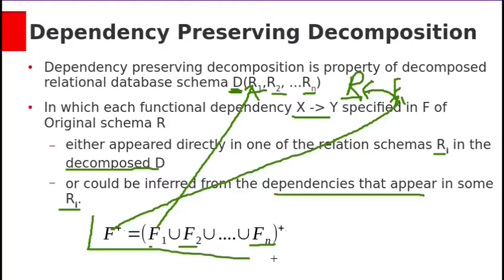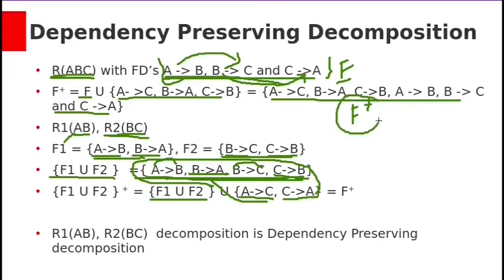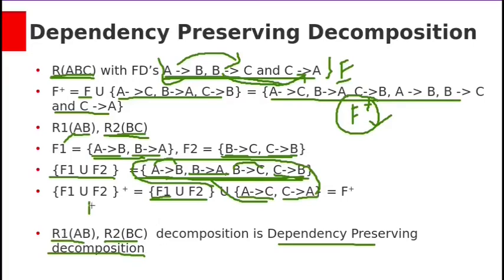So in this example, the closure of the functional dependencies of the original relation F+ equals the union of all decomposed relation closures. Therefore, this decomposition into R1 and R2 is a dependency preserving decomposition — we are not losing any functional dependencies even after decomposing R into these two sub-relations.